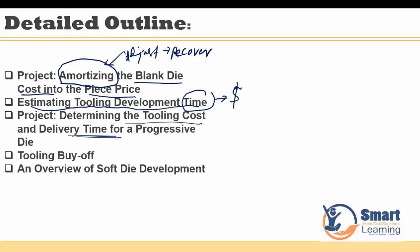In our next project we'll be looking at determining the tooling cost and the delivery time of the progressive die. We'll also cover the complete tooling buy-off checklist and a new concept of soft die development — I'll give an overview — and then we'll wrap up this complete chapter.